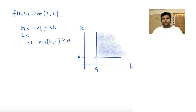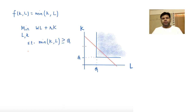Now we plot isocost lines. Isocost lines will be lines with slope W/R and they look like this. To minimize cost, you have to choose the lowest isocost line that passes through the constraint set.